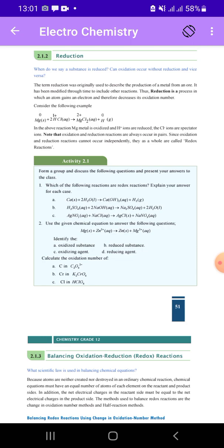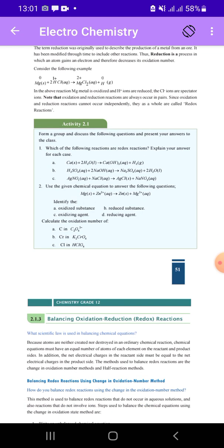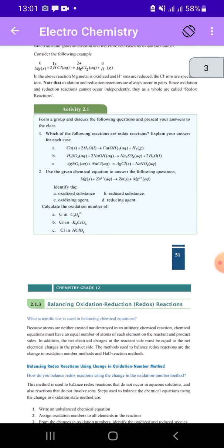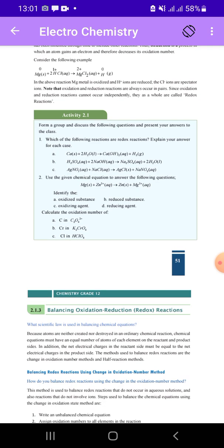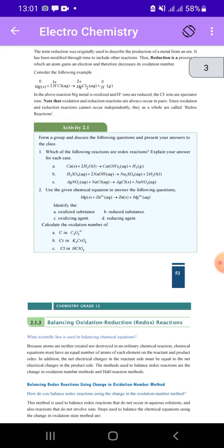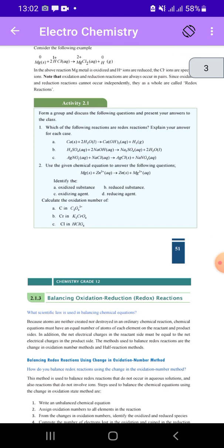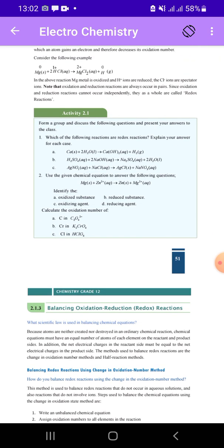Chlorine ions are spectators. Oxidation and reduction always occur together. Oxidation reaction cannot occur independently. A reduction reaction must occur together.